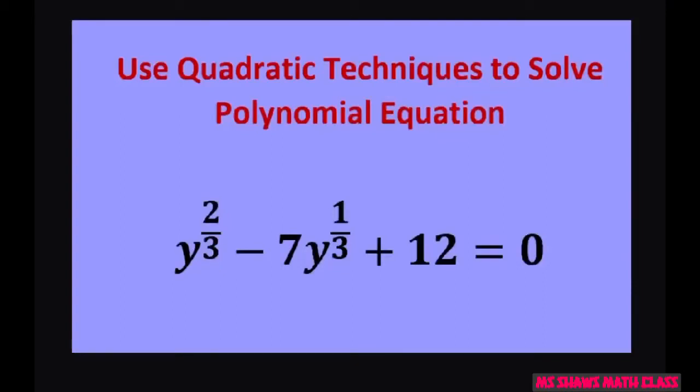Hi everyone. We're going to use quadratic techniques to solve y to the two-thirds power minus y to the one-third power plus 12 equals 0.